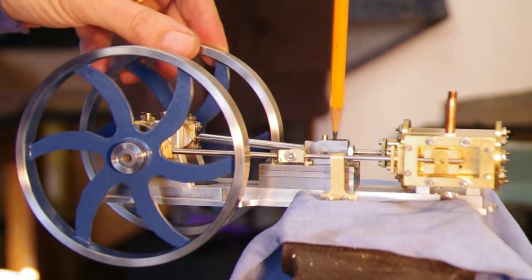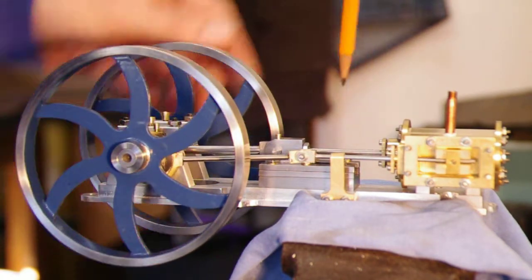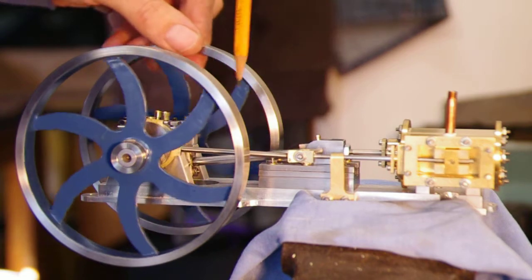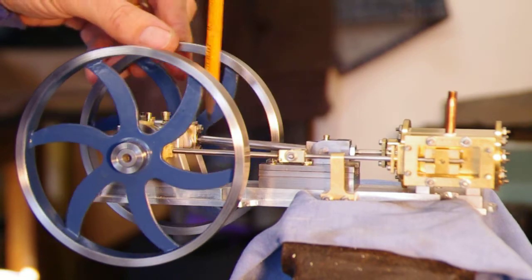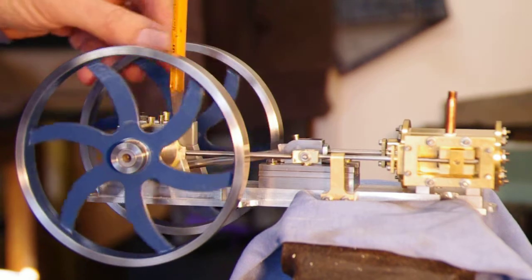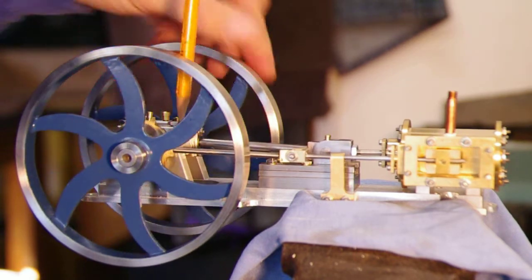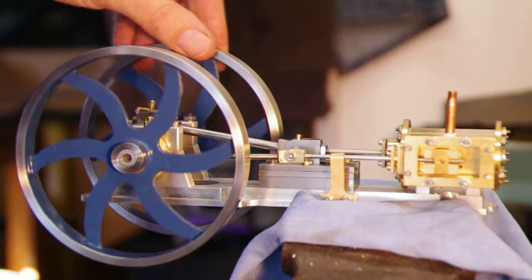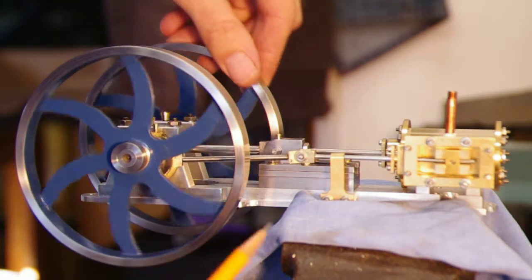You've got the connecting rod here to the piston. Back here you can probably see the crankshaft assembly and connecting rod, and back here is the valve timing eccentric. They're phased properly so the engine will hopefully work.